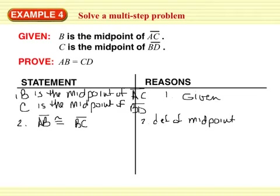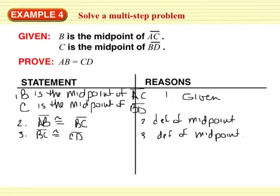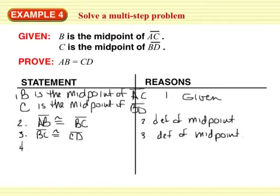For the other segment, you also know that segment BC is congruent to segment CD — same reason, definition of midpoint. I see that AB is congruent to BC, and BC is congruent to CD. So we know that segment AB is congruent to segment CD because of the transitive property of congruence.